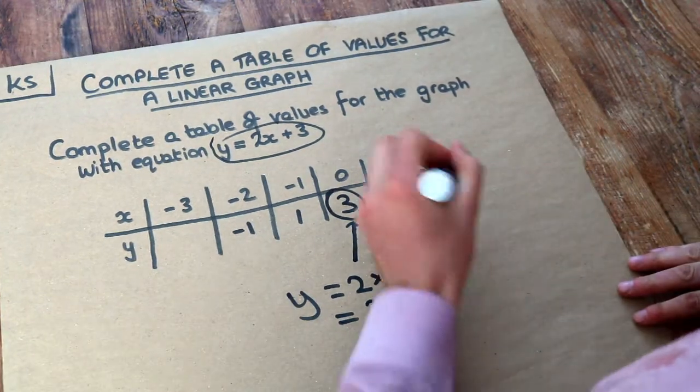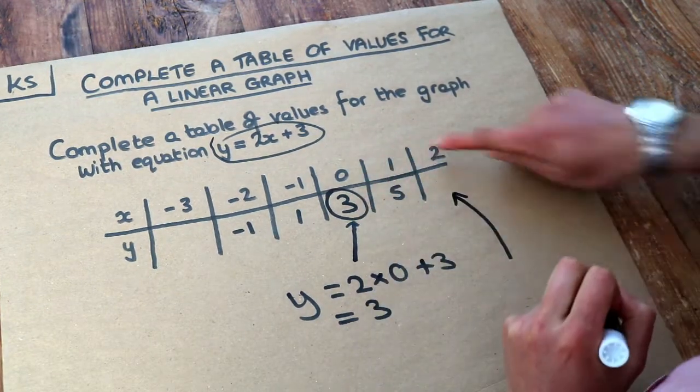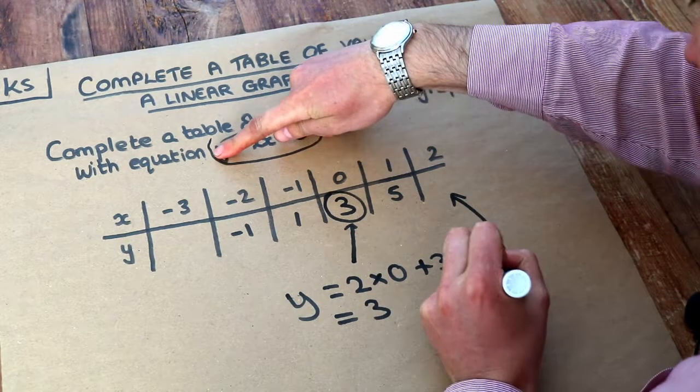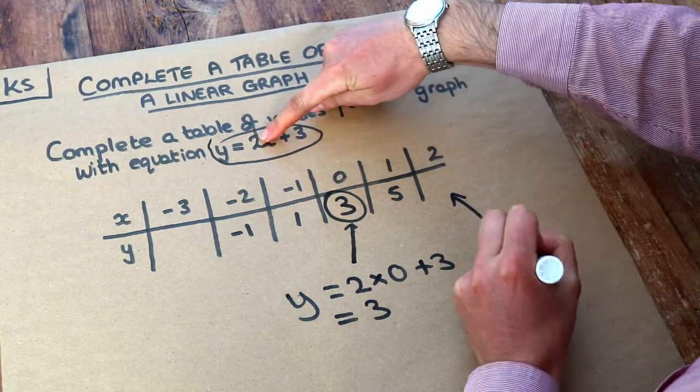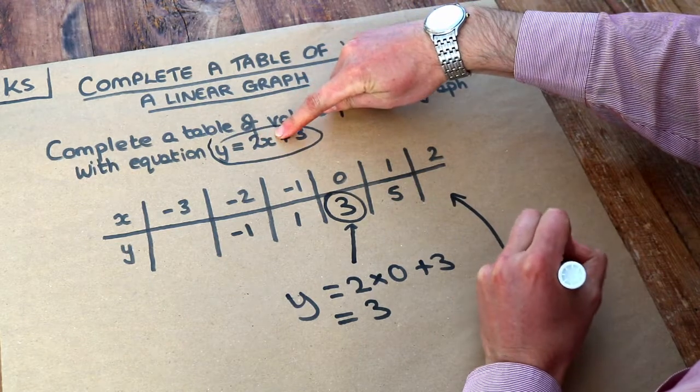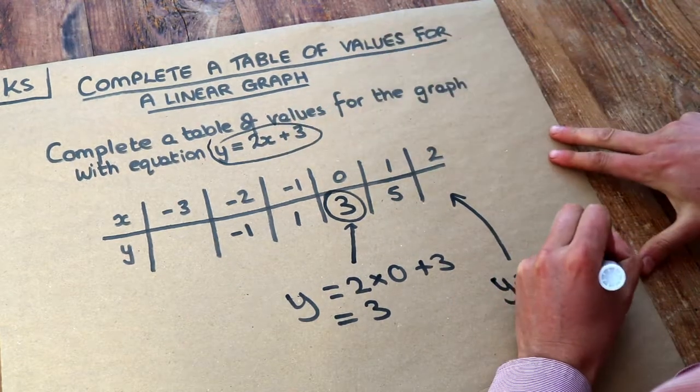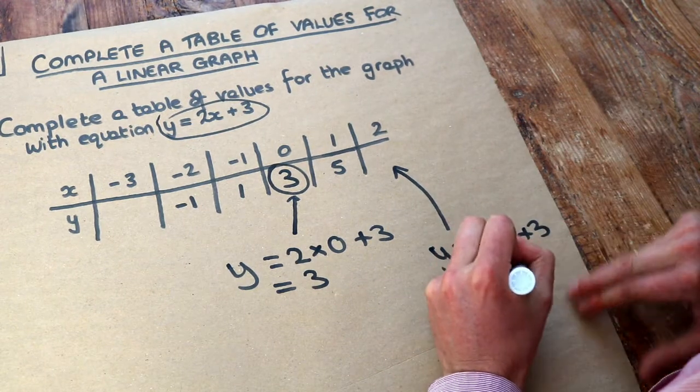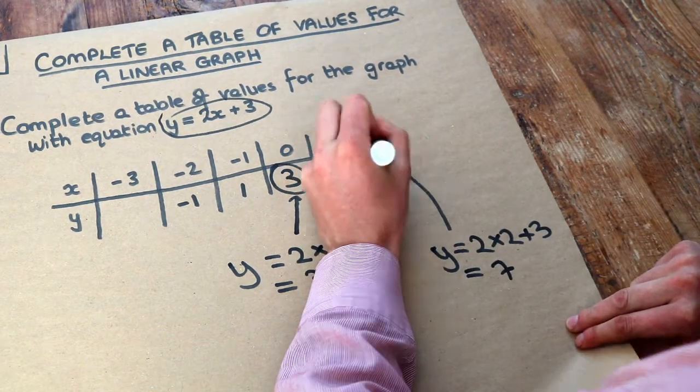What about when x is 2? When x is 2, we get y equals 2 times 2. 2x, 2 times 2, plus 3. That's going to equal 4 plus 3, which is 7. So that's going to be 7.